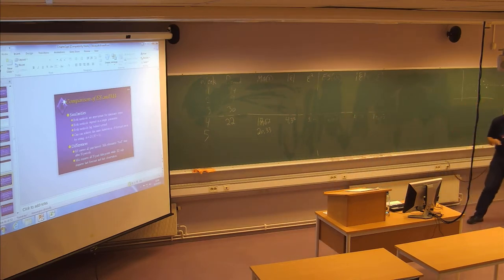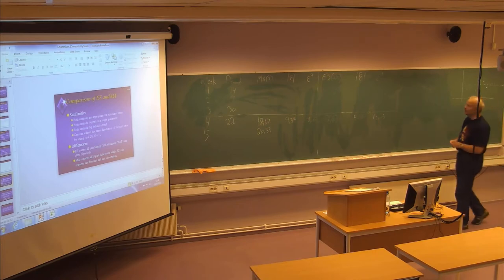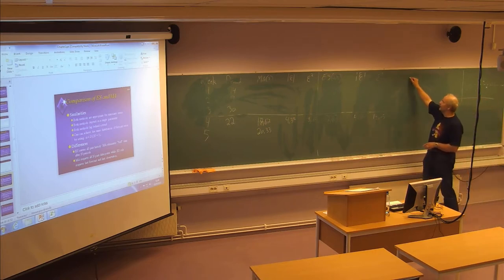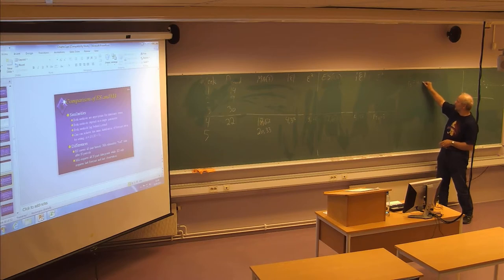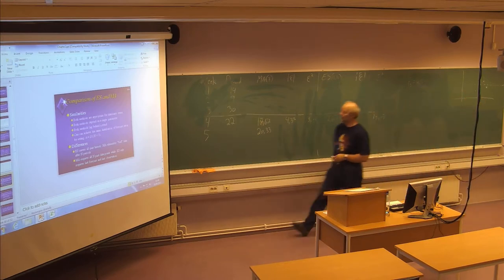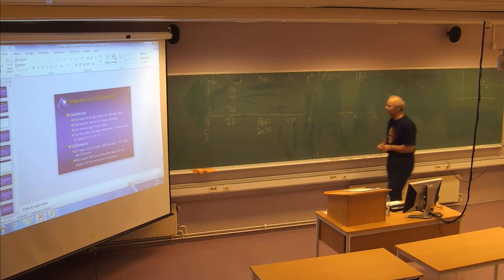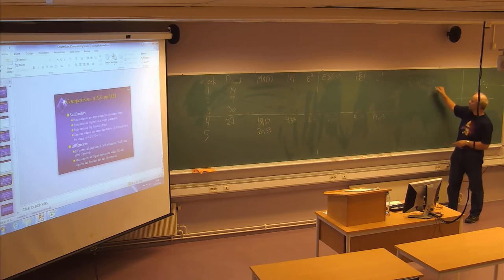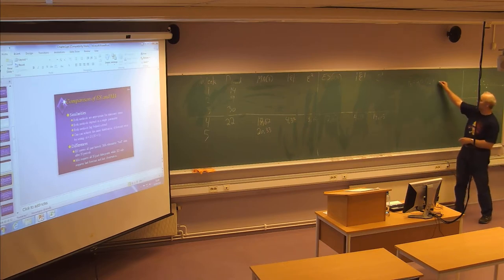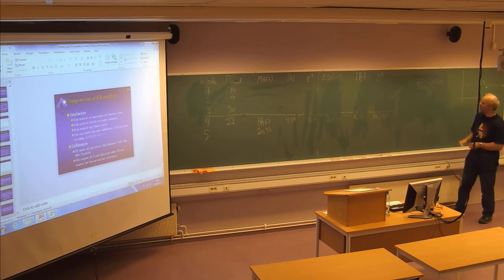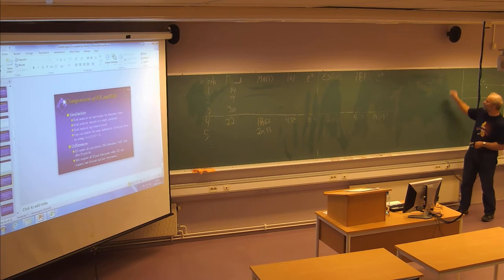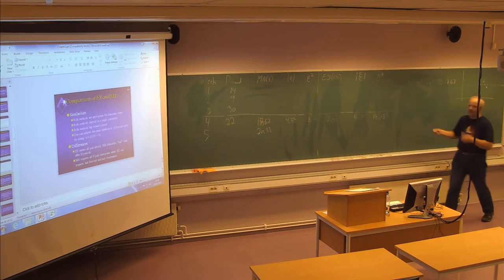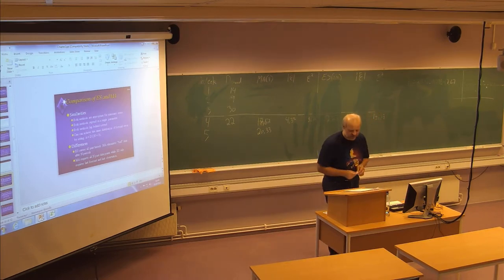Using the exponential smoothing method, the forecast for period five is: 0.15 × 22 + 0.85 × 17.67 = 18.32. We can see a significant difference between the two methods. The data point of 14 is excluded from the moving average set, while the new data point of 22 is included with equal weight as previous demands. In exponential smoothing, 15% weight goes to the new measured value and 85% weight to the latest forecast.